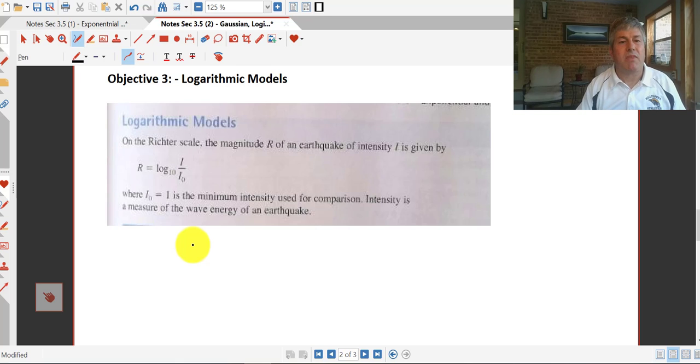And finally, a logarithmic model. On the Richter scale, the magnitude r of an earthquake of a given intensity is given by this logarithmic model: r equals log base 10 or a common log of i over i sub 0, where i sub 0 equals 1 is the minimum intensity for an earthquake.